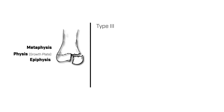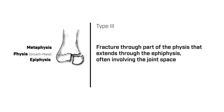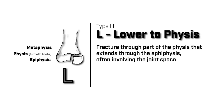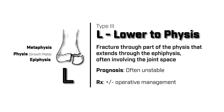A type 3 Salter-Harris fracture is a fracture through the growth plate which extends into the epiphysis. You'll remember this type of fracture by the third letter in SALTER — this is an L, which stands for lower to the growth plate, because the fracture extends below the physis. This type of fracture has a prognosis that varies, and if there is significant involvement of the joint, this fracture can be unstable and operative management can be considered.